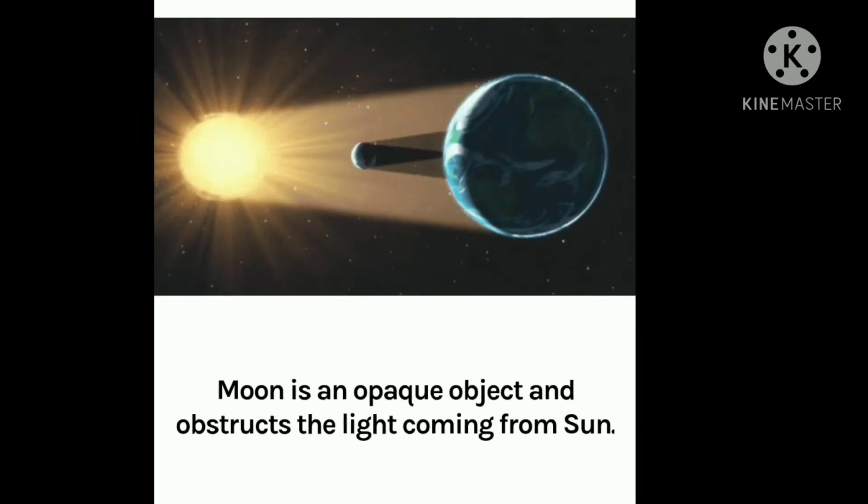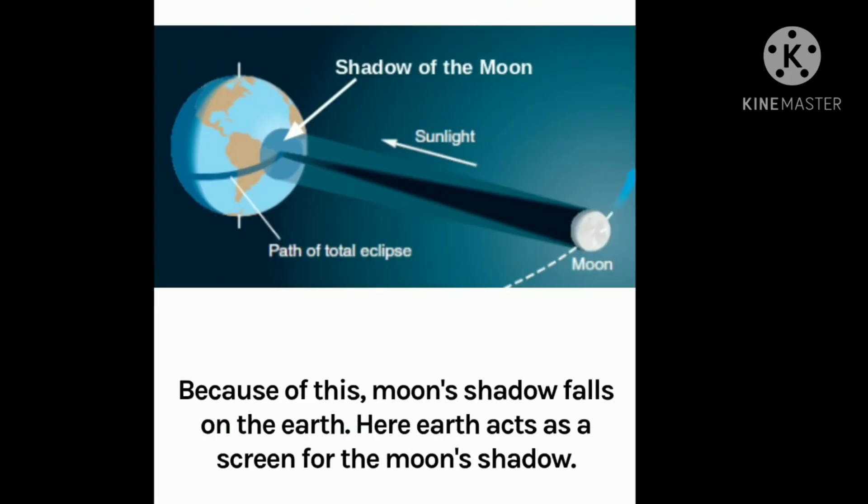Now the moon is an opaque object and obstructs the light coming from the sun. Because of this, moon's shadow falls on the earth. Here earth acts as a screen for the moon's shadow.